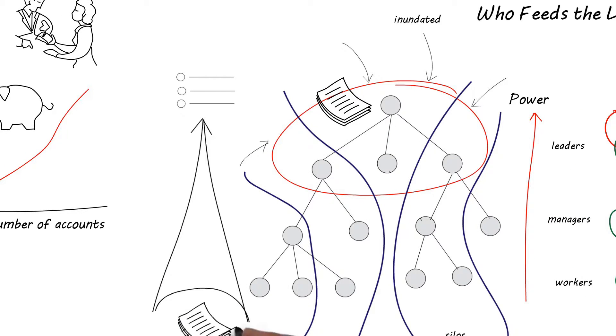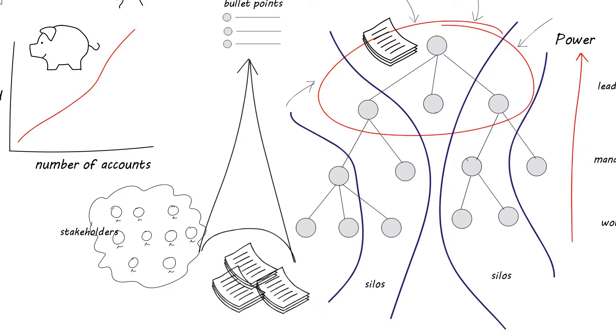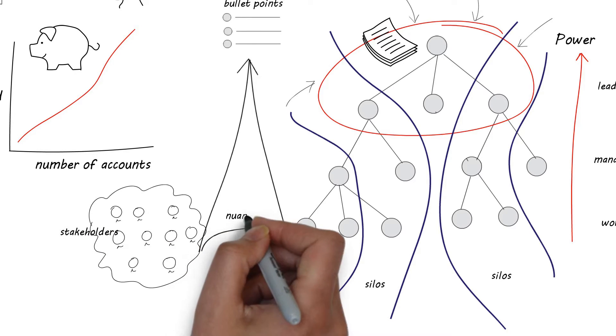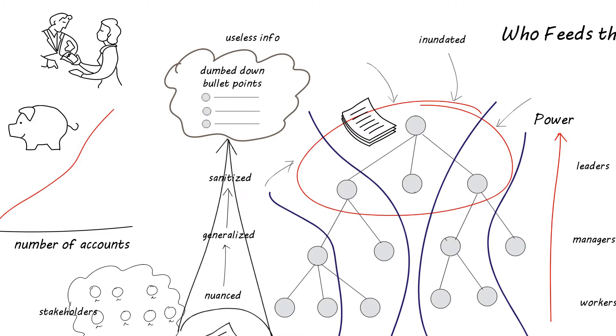Not only that, as the information flows up the organization, it has to be vetted by many stakeholders, politically nuanced so no manager or leader is upset, generalized so that nuances are lost, and finally sanitized to avoid any finger pointing. Essentially, the information is useless.